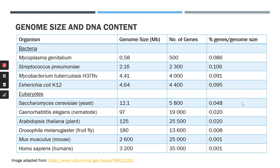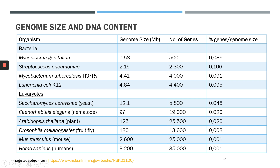When we go down to the eukaryotes — take Saccharomyces cerevisiae for example — its genome size is much larger than that of E. coli, although Saccharomyces cerevisiae, the yeast, is also a single-celled organism. However, the number of genes is not that much higher compared to E. coli. Dividing the number of genes by the total genome size gives 0.048 for Saccharomyces cerevisiae, whereas in E. coli it's 0.095. Going further to the mouse and human, their genomes are much larger, yet the ratio of genes to genome size is just 0.001 for both. This demonstrates that the number of protein-coding genes relative to total genome size is much smaller in eukaryotes compared to prokaryotes.